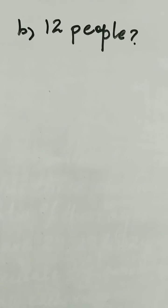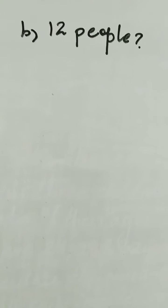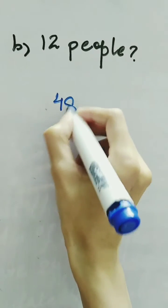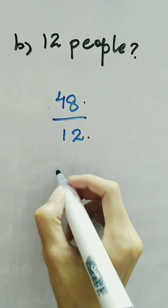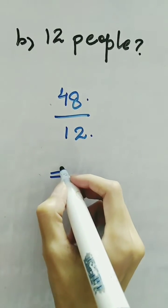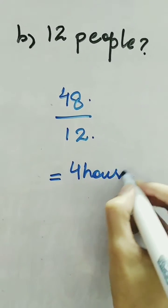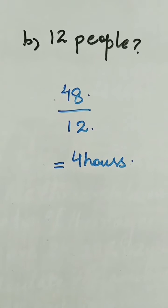Similarly, in part B, we need to find how long it would take if 12 people dig the trench. From the previous part, we know it takes 48 hours for 1 person. So we divide 48 hours by 12 people and get 4 hours. Therefore, 12 people will dig the trench in 4 hours.